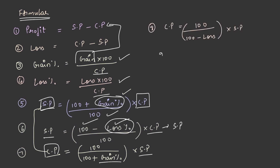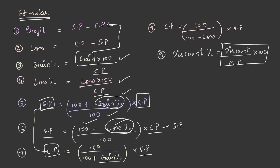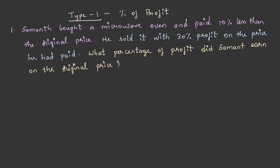There are questions in profit and loss where discount plays a key role. The discount percentage formula is: discount divided by marked price, multiplied by 100. Here, marked price is the price before discount — the price marked on the product. Make sure you are perfect with each and every formula so that you can solve the questions easily.